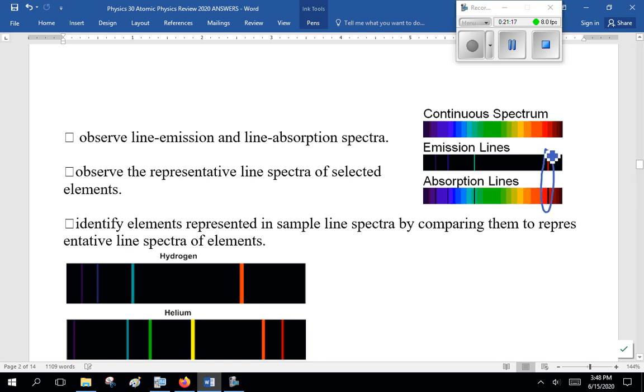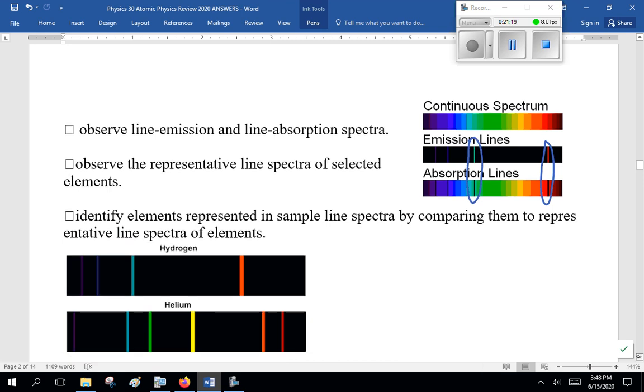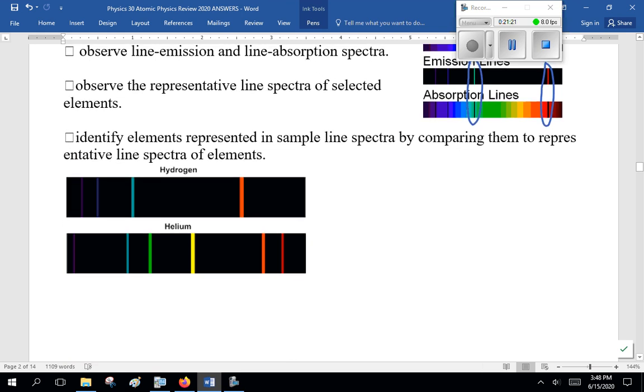Now, observe line emission and line absorption spectra. Observe the representative line spectra of selected elements. Now, a continuous spectrum is all the colors. An emission is you're emitting certain lines only. An absorption spectra, you're missing or absorbing certain lines only, but not everything. Now, identify the elements representing a sample line spectrum by comparing them to a representative line spectra of the elements.